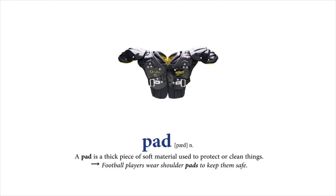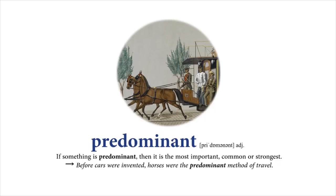Predominant: If something is predominant, then it is the most important, common, or strongest. Before cars were invented, horses were the predominant method of travel.